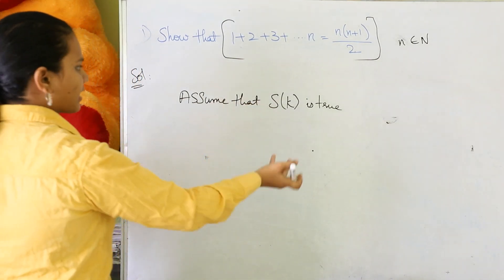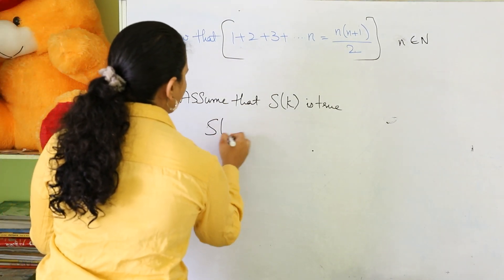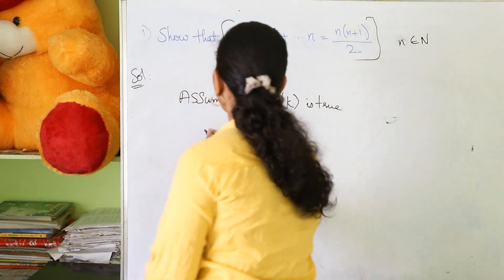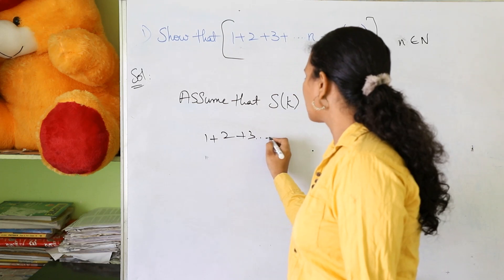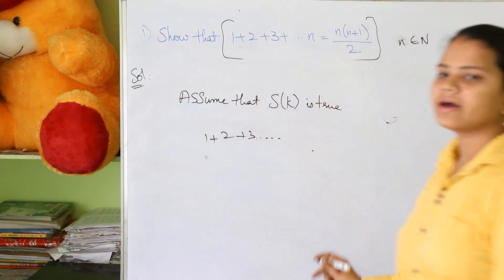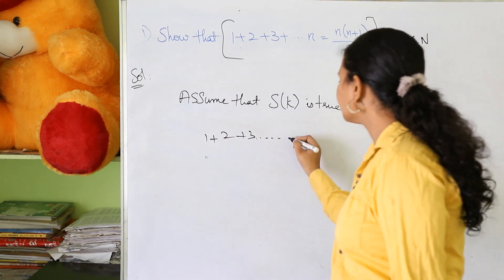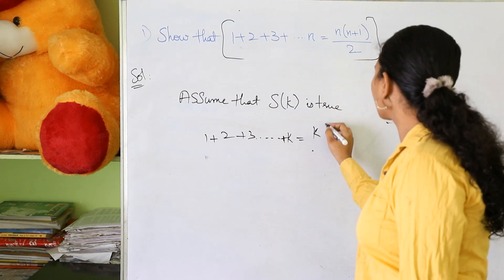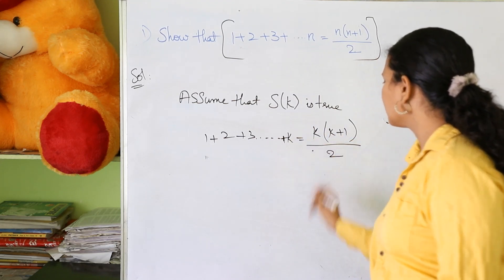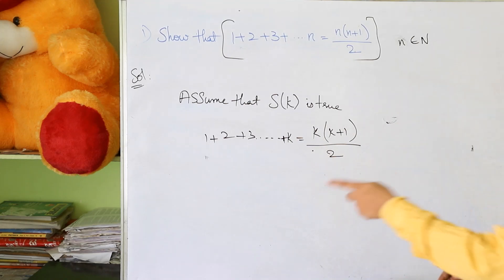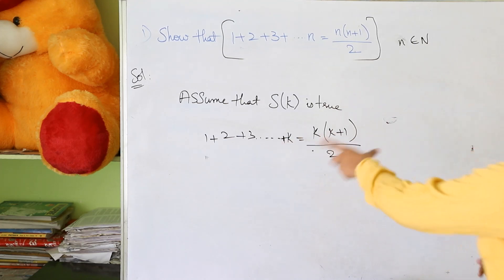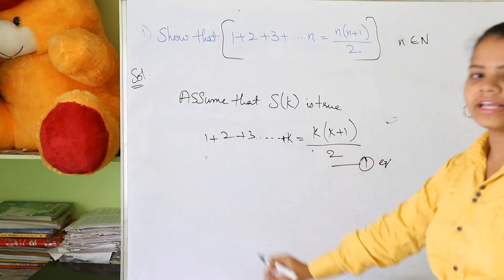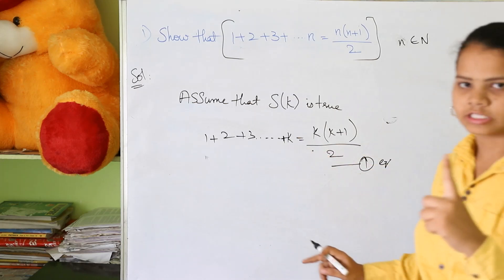If you assume that S of K is true, then instead of n, substitute k value. So 1 plus 2 plus 3, going on through all the natural numbers, with k in place of n gives us k into k plus 1 by 2. This is our first equation — keep this equation aside.